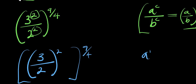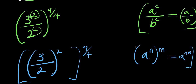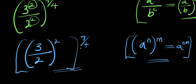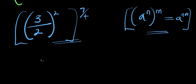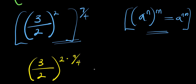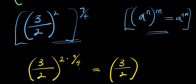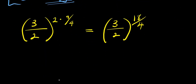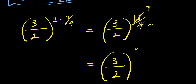Now, if you have a^n raised to the power of m, this equals a to the power of n times m. So I'm going to apply this identity, which means I'm simply going to have 3 divided by 2, raised to the power of 2 times 9 over 4. This gives me 3 divided by 2, raised to the power of 18 divided by 4. Since 2 divides into 18 nine times and into 4 twice, this simplifies to 3 divided by 2 raised to the power of 9 over 2.